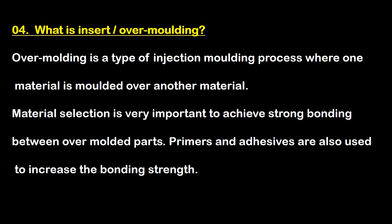Question four: what is insert and over molding? Over molding is a type of injection molding process where one material is molded over another material. Material selection is very important to achieve strong bonding between over-molded parts. Primer and adhesive are also used to increase the bonding strength.